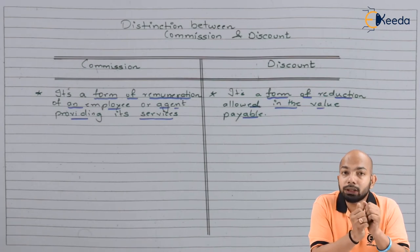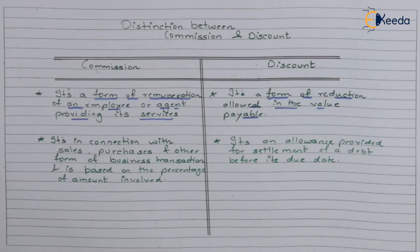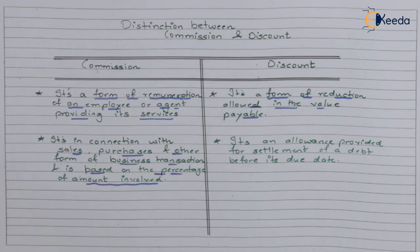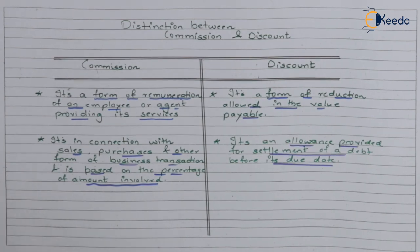The second point of discussion: commission is related to transactions like sales, purchase, and other business transactions specific to your business. It is based on a percentage value — the percentage of commission depends on the kind and amount of the transaction. On the other hand, discount is the kind of allowance provided for the settlement of debts, meaning any long-term liability settled before its due date, and this benefit is provided to the person who is supposed to pay the bill amount.